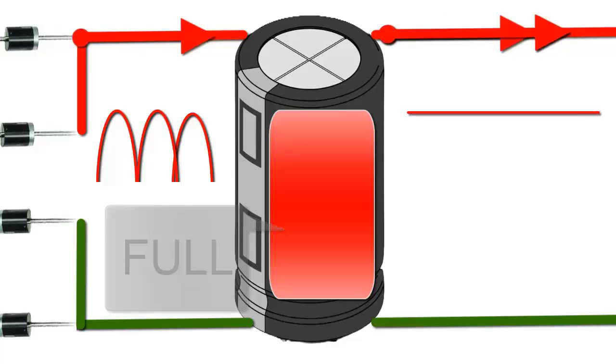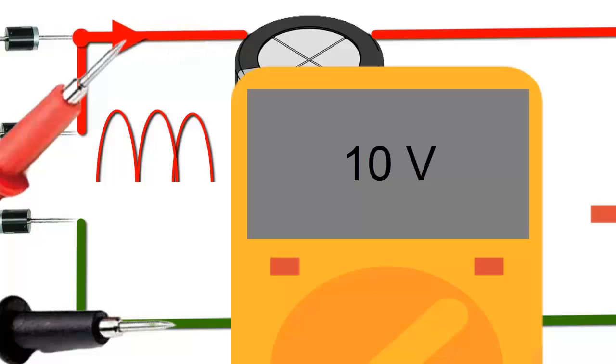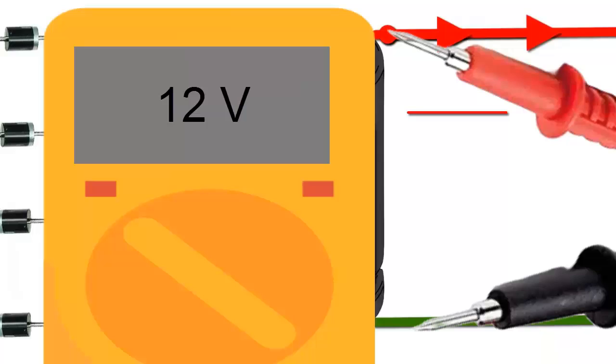How do capacitors work on electronic boards? On electronic boards, capacitors primarily perform two functions. First, signal filtering. They eliminate noise and fluctuations in the electrical current, ensuring a stable and clean supply to sensitive components.